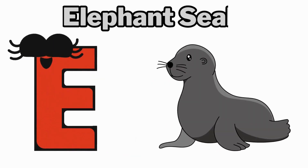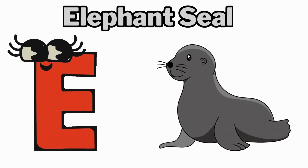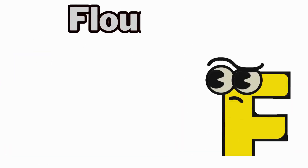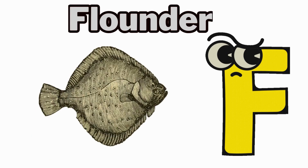E is for elephant seal, ah, elephant seal. F is for flounder, fuh, flounder.